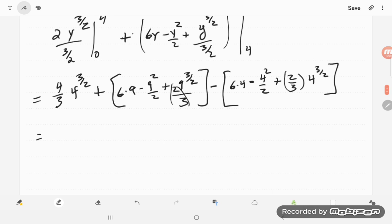So these two integrals, well 4 to the 3 halves, that's the square root of 4 which is 2 cubed, so that's 8. So I get 32 over 3, plus, let's see, 54 minus 81 over 2, and then 9 to the 3 halves, so that's square root of 9 which is 3 cubed which is 27 times 2 thirds, well that's actually 2 times 9 then, and so that's where we get an 18.